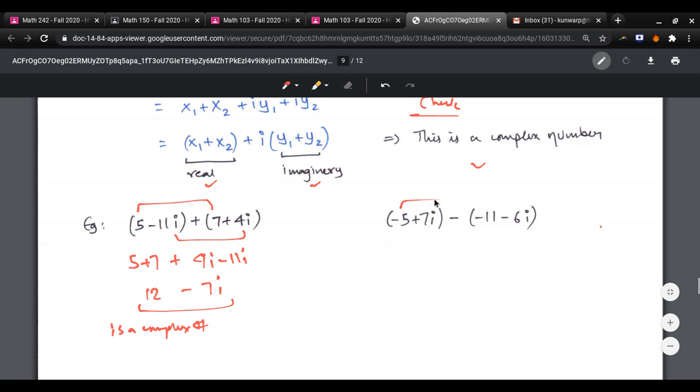Now here, again, the real parts are, just be careful here, because you have a negative. So this is negative 5 plus 7i, negative, negative becomes a positive, and a negative, negative becomes a positive. So when you combine them, that's 6 plus 13i.